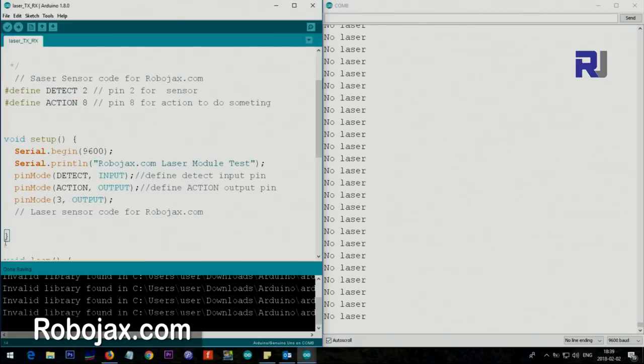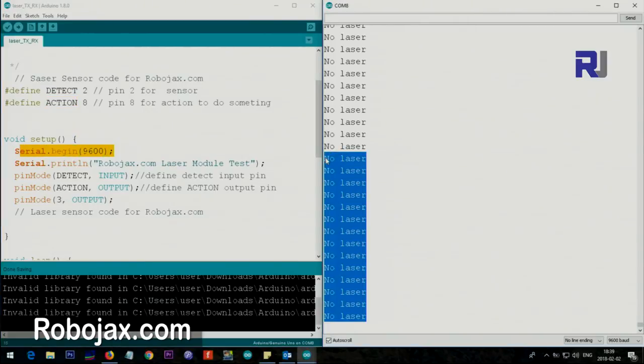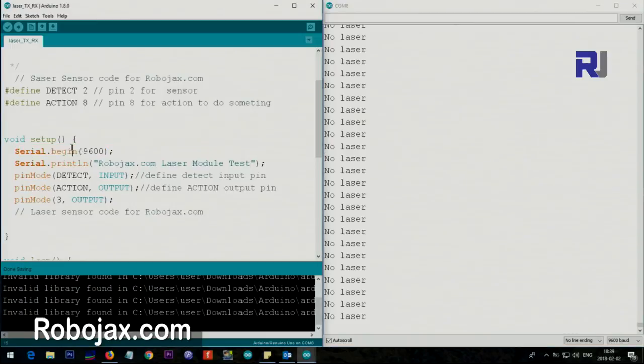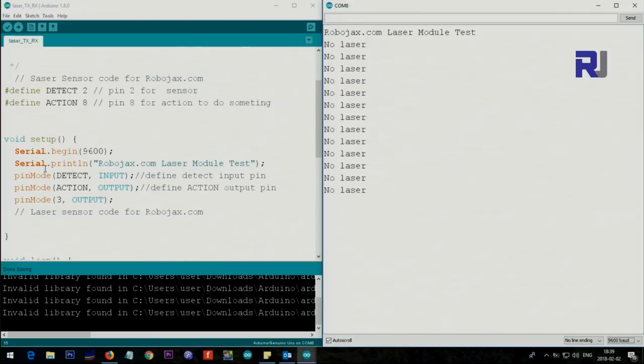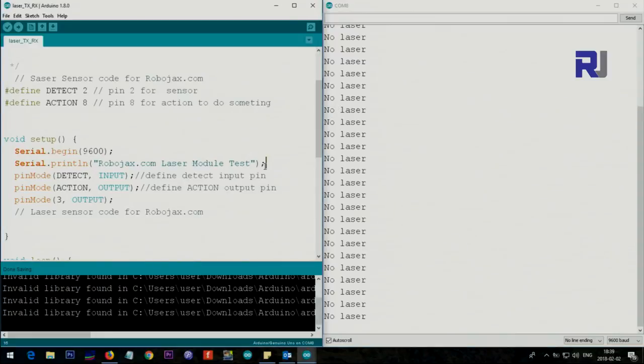Inside the setup, which starts from here to here, we define the serial monitor to print this text for us. We have to initialize it with serial.begin with 9600 baud. 9600 baud is at the bottom of the screen, so this number must match that. Then we have the serial monitor print which prints the top text that you just saw. We set the detect pin as input, and detect means two, so this is as if I type two here. Then action as if I type eight, so eight as an output that's for the action.